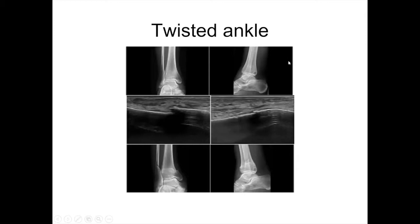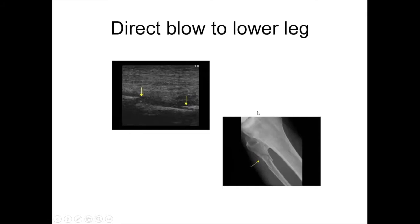Here we have a twisted ankle. At the top we have what looks like a normal ankle x-ray. An ultrasound showed cortical disruption and some fluid, making it clear this was a non-displaced fracture through the fibula and tibia. This shows how much more sensitive ultrasound is than x-ray, particularly for non-displaced fractures.